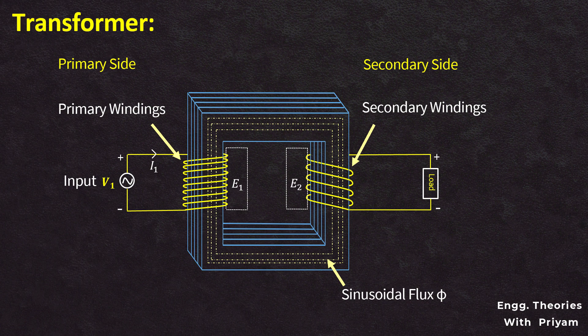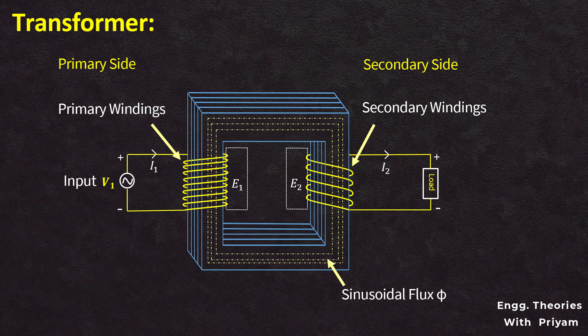which is connected across the load and the current in the secondary is I2. Then the voltage across the load is equal to V2.